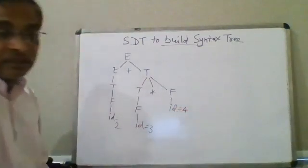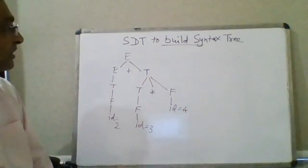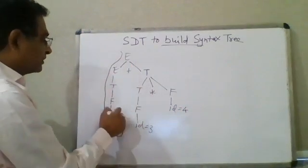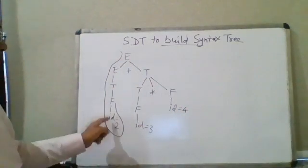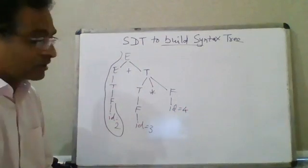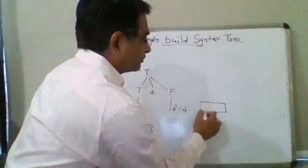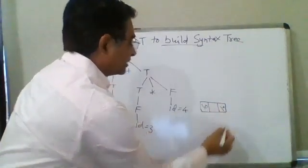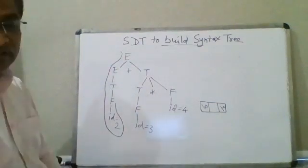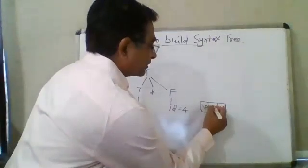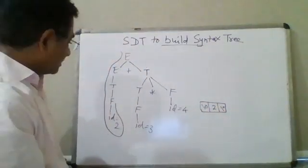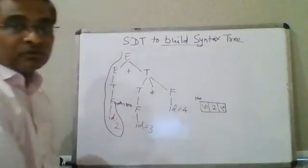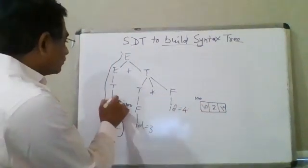For the expression 2 plus 3 star 4, id values are: id equal to 2, id equal to 3, and id equal to 4. When parsing begins, the first reduction is F → id. The make_node function is called, creating a node with null on both left and right sides, and the value 2. Let's say this node's address is 100, so nptr equals 100.